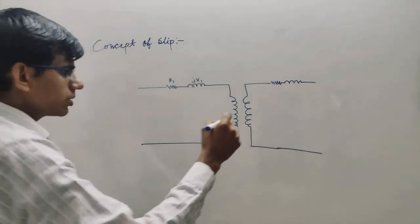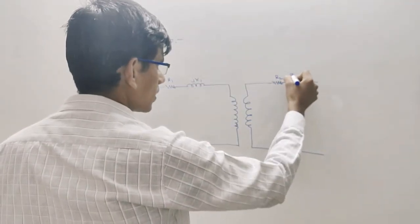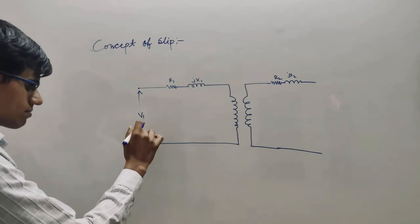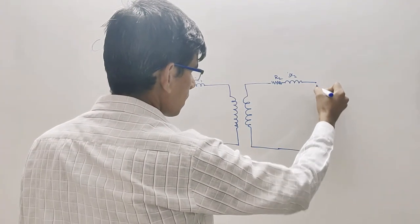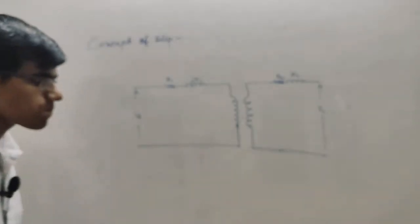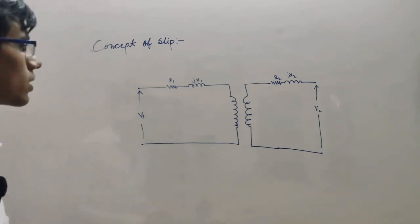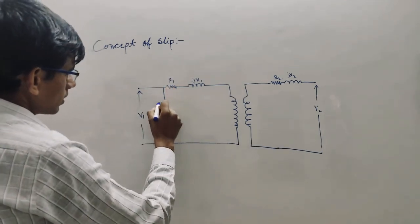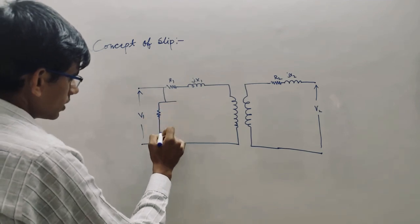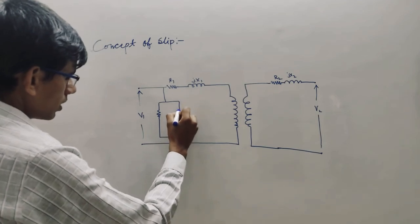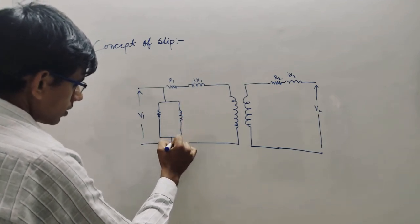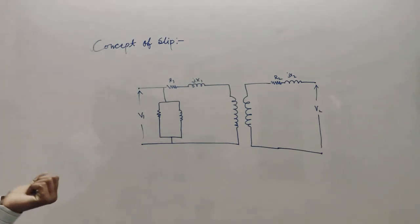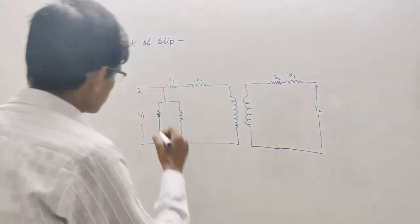You are all familiar with the equivalent circuit of a transformer. The applied voltage is V1. This is the approximate equivalent circuit of a transformer. This includes the magnetizing branch, which we may or may not use depending on the type of question.